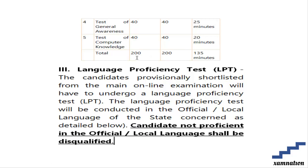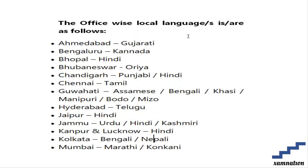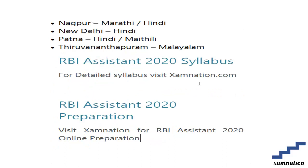After qualifying the mains, candidates must undergo a Language Proficiency Test (LPT). Candidates who are not proficient in the official or local language will be disqualified. You must choose one local language such as Gujarati (Ahmedabad), Kannada (Bangalore), Hindi (Bhopal), Odia, Punjabi, Tamil, Assamese, Bodo, Mizo, Telugu, Urdu, Bengali, Nepali, Marathi, Konkani, Maithili, or Malayalam.